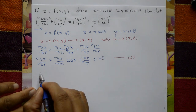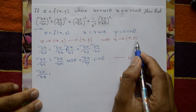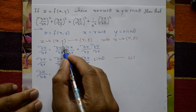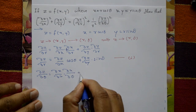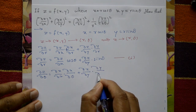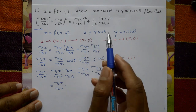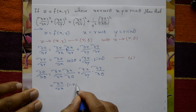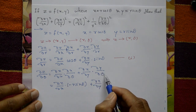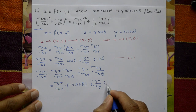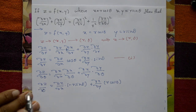dou z by dou theta is equal to dou z by dou x into dou x by dou theta plus dou z by dou y into dou y by dou theta. This is equal to dou z by dou x into minus r sine theta plus dou z by dou y into r cos theta. This is equation number 2.